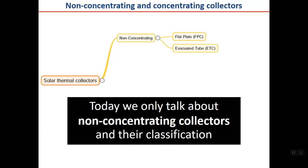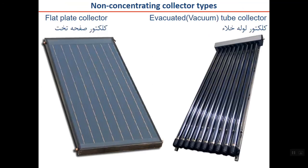Non-concentrating collectors are classified into two main categories: flat plate (FP) and evacuated tube (ETC) collectors. The left image shows a flat plate collector and the right shows an evacuated or vacuum tube collector.